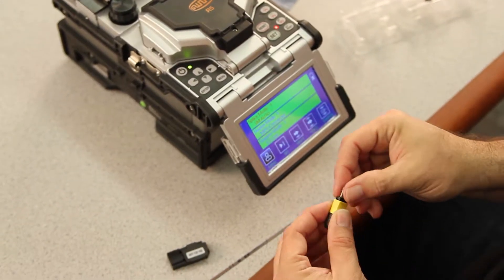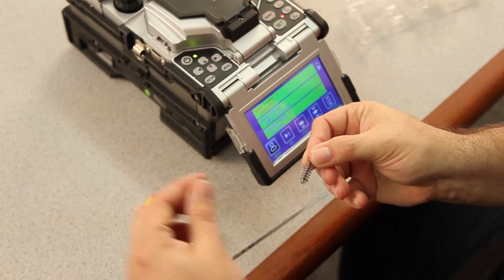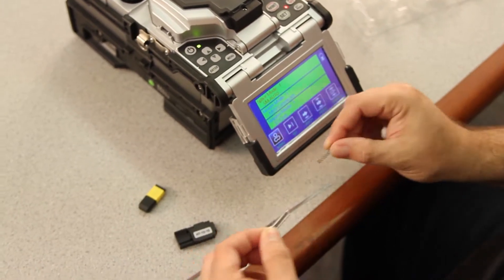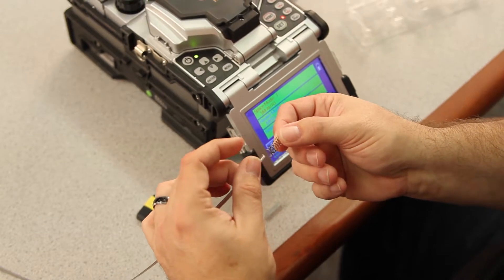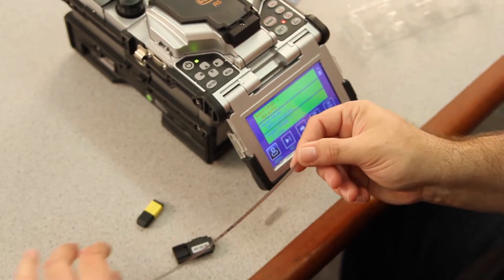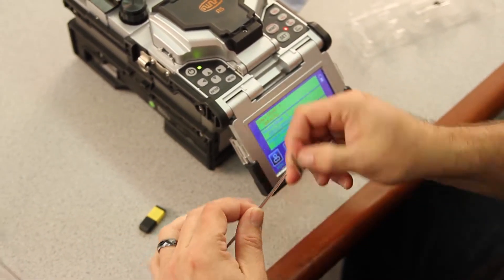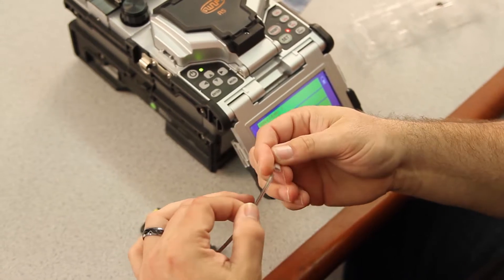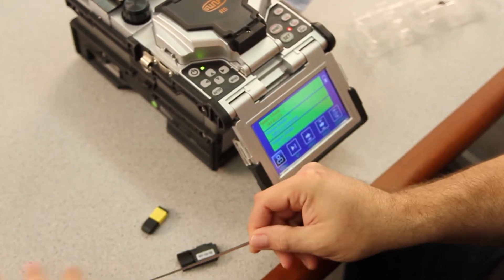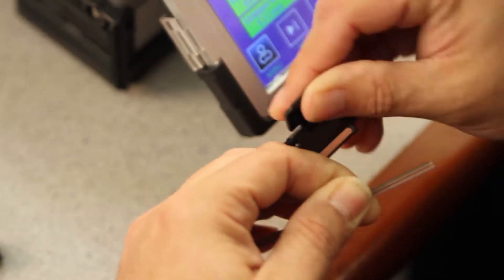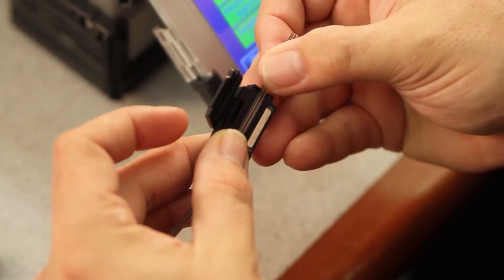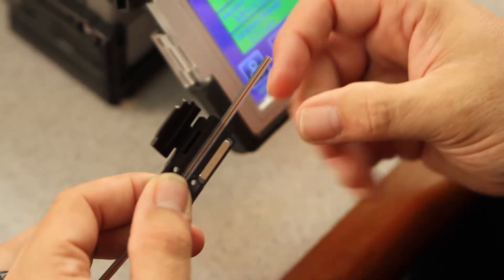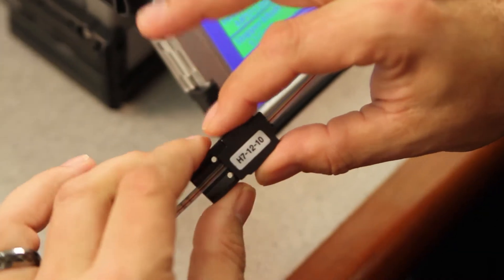Take your front shell, remove your spring and your heat shrink. Install your spring and then your heat shrink tube, then place your fiber inside of the left side holder, leaving a one-inch tail for stripping.